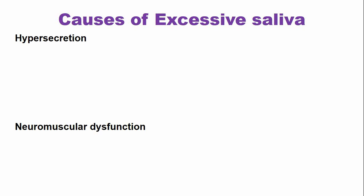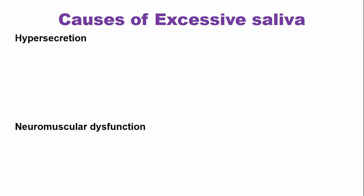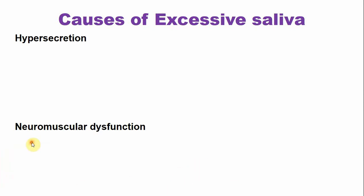In neuromuscular dysfunction, the hypersalivation is sometimes referred to as false sialorrhea or false excessive saliva production, because the salivary production is normal but it is demonstrated as excessive saliva since the swallowing mechanisms are impaired.